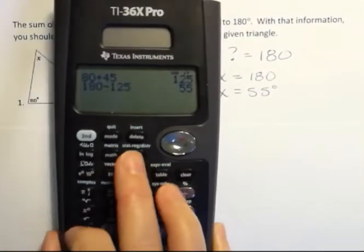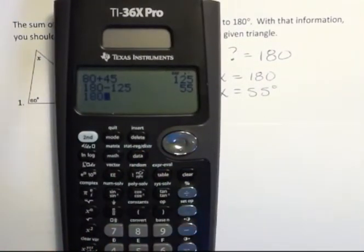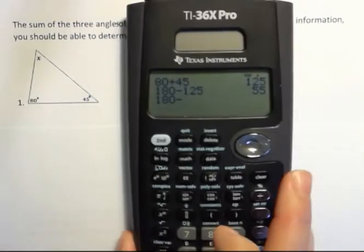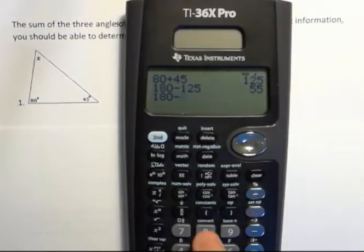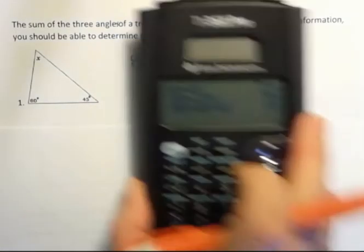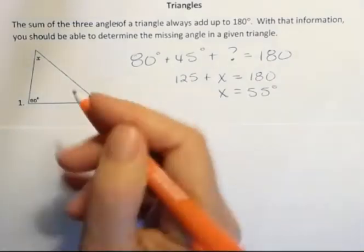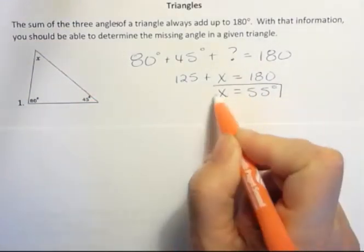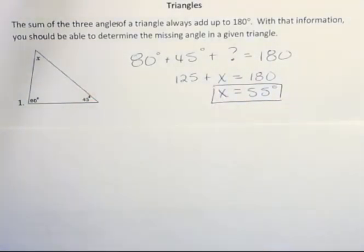Another way you could do that is just say, well I know I have 180. I'm going to subtract off the first angle, which is 80. And then I'm going to subtract off the second angle, which is 45. And that's going to leave 55. So do it however you like, but we should in the end figure out that that missing angle X equals 55 degrees.